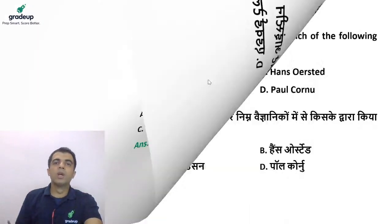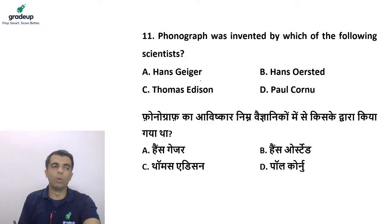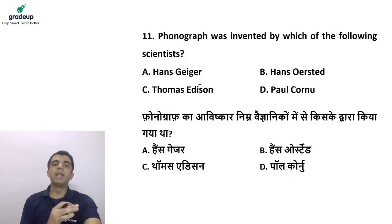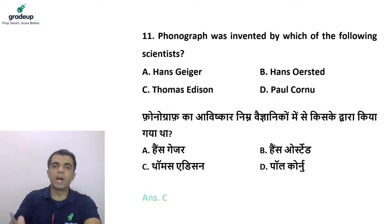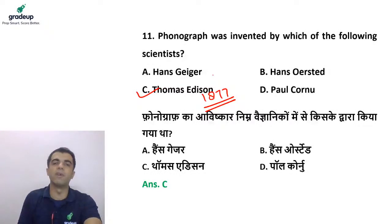Next question: the phonograph was invented by which of the following scientists? Options are Hans Geiger, Hans Oersted, Thomas Edison, and Paul Cornu. The phonograph was used for mechanical recording and reproduction of sound — later also called the gramophone. It was introduced by Thomas Edison in 1877.